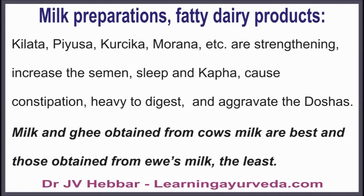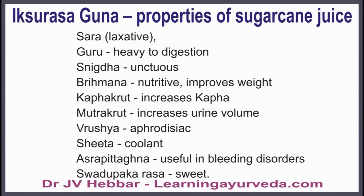Milk and ghee obtained from cow are the best, and those obtained from Eve's milk are least best. This completes the milk group. Next is Ikshu Varga, or group of sugar cane juice and its products. Sugar cane juice is laxative, heavy to digest, unctuous, nutritive, improves weight, increases kapha, increases urine volume, aphrodisiac, coolant, useful in bleeding disorders, and is sweet.